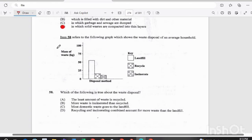Item 58. Item 58 refers to the following graph which shows the waste disposal of an average household. Which of the following is true about the waste disposal? A. The least amount of waste is recycled. So that's not true. B. More waste is incinerated than recycled. That's also untrue. Answer C. Most domestic waste goes to the landfill.